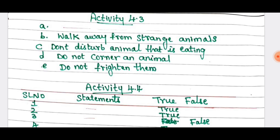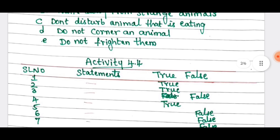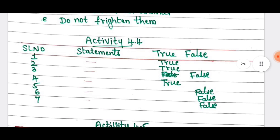Then, poem — once upon a time poem is there. Read it. Activity 4.4 — first and third stanza. Based upon that, there is a true or false question. Serial numbers 1, 2 and 4 are true. All others are false.